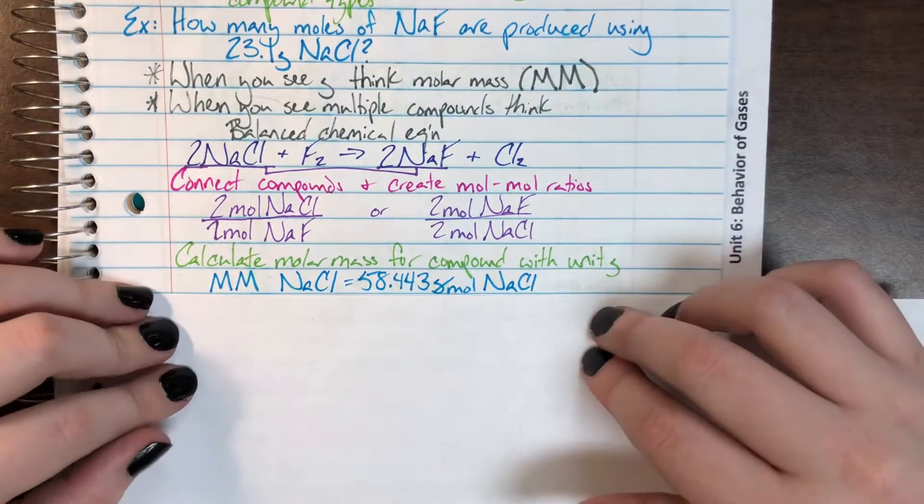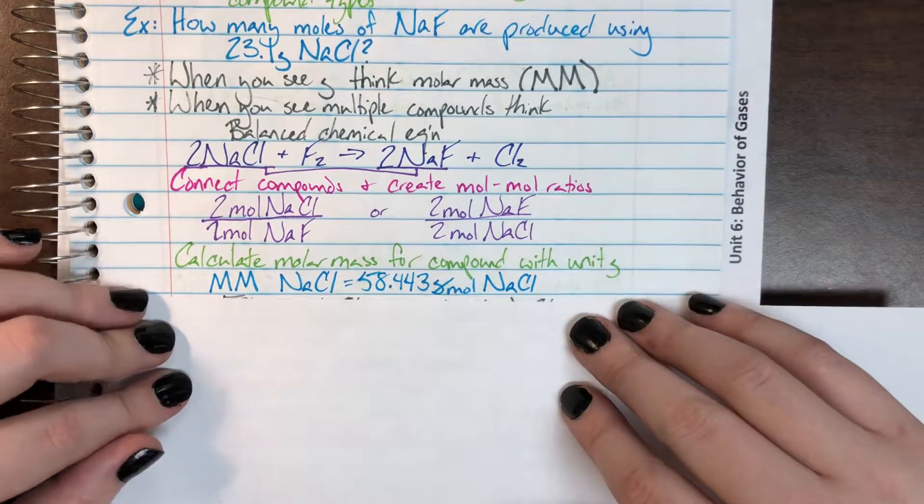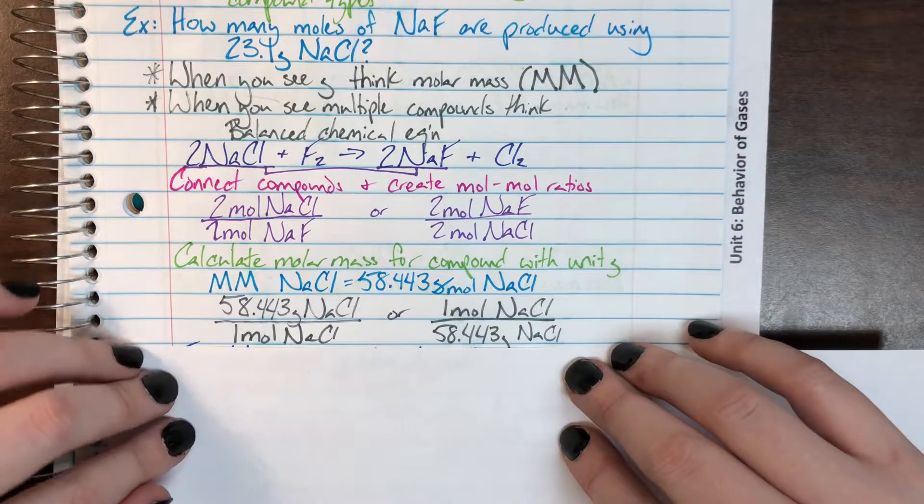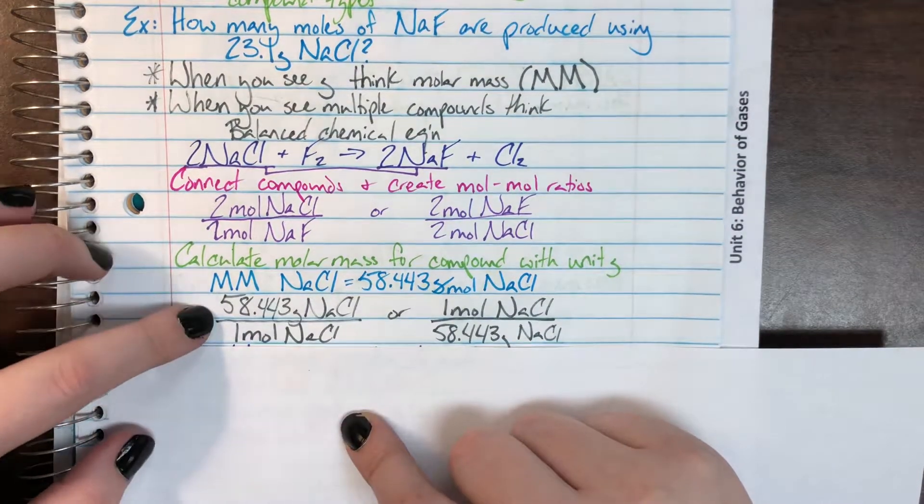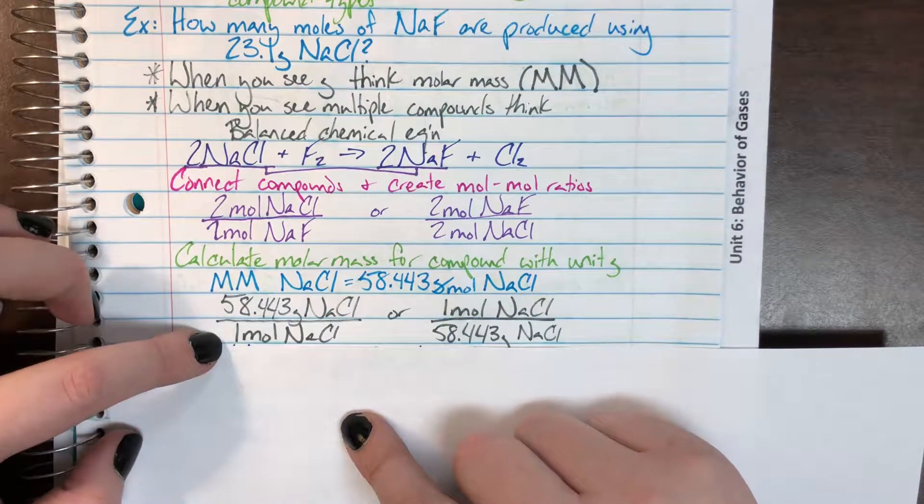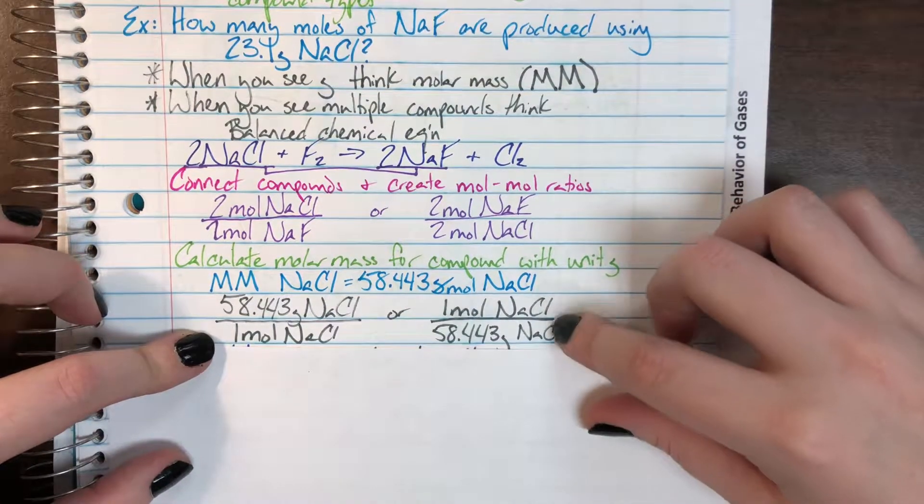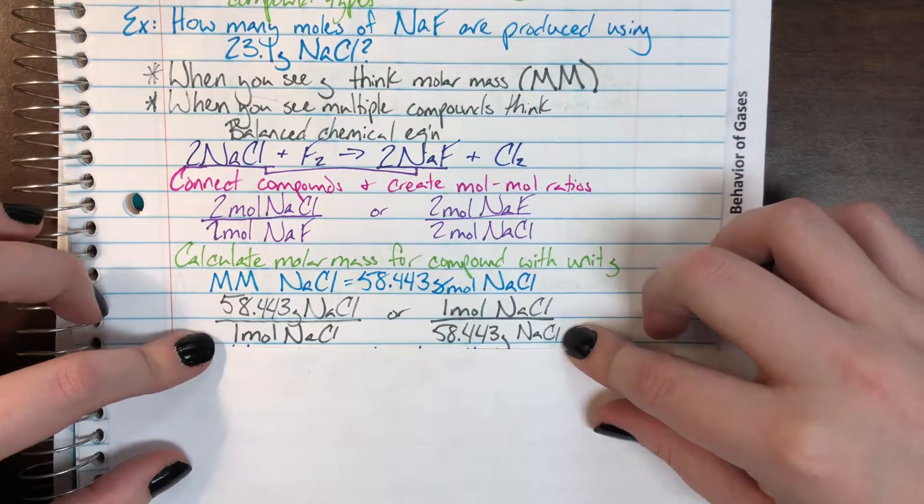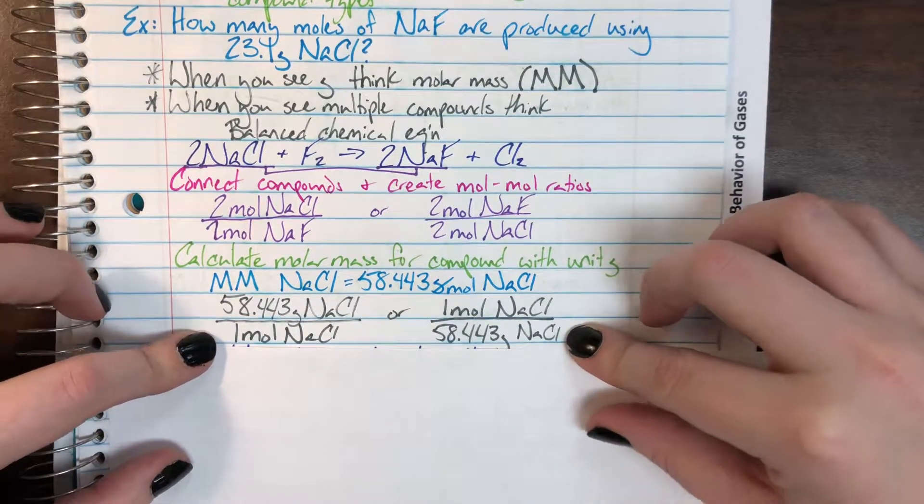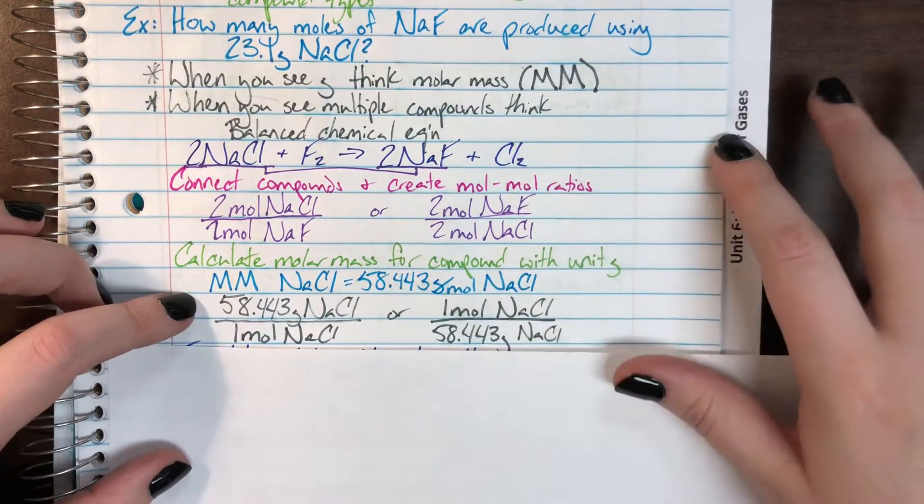Let's turn it into the ratio form. We have two ways of writing it. We can either say for every 58.443 grams of sodium chloride, I have one mole of sodium chloride. Or we could say for every one mole of sodium chloride, I have 58.443 grams of sodium chloride. Remember, it's the same information. The only difference is what order I'm saying it in.